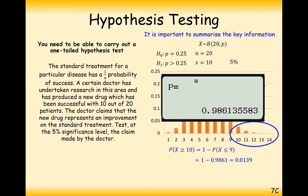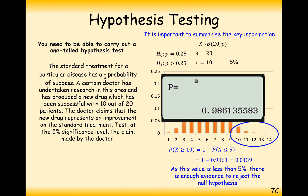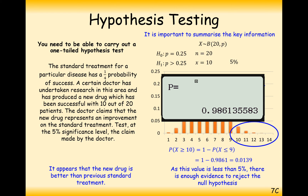That's such a low probability — there's such a low chance that happens at random — that we think something has happened here. The doctor has a very good claim that the new drug is successful. As the value is less than 5%, there is enough evidence to reject the null hypothesis. It appears the doctor's new drug is better than the standard previous treatment.